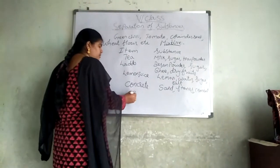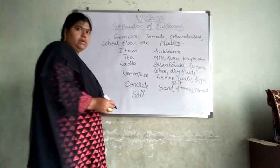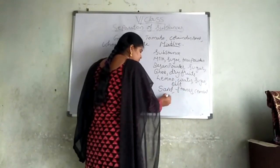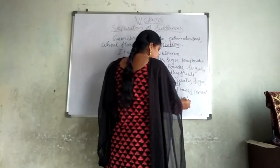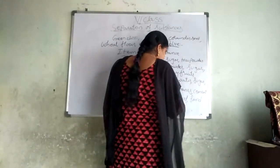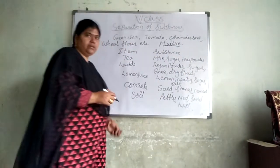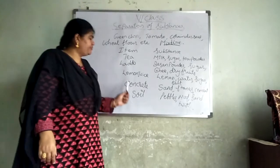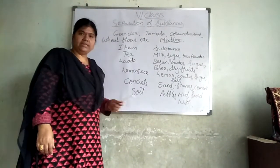What is present in the soil? In the soil, we can see small pebbles, mud particles, sand particles, and some twigs. So I took five items here: tea, laddu, lemon juice, concrete, and soil.